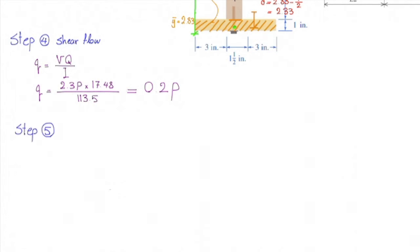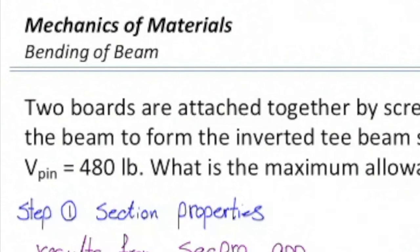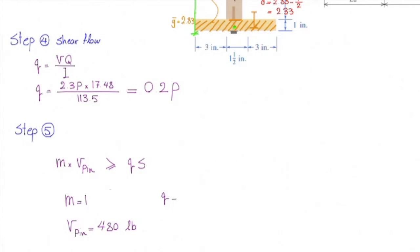Step number five: we determine the shear stress in the bolt and based on that we determine the required force. The design equation would be m times V-pen should be larger than q times s. Now let's plug the values. m in this case is 1. V-pen is 480 pounds as given in the problem statement, the value of q as calculated in the previous step is 0.2P, and spacing is 4 inches.